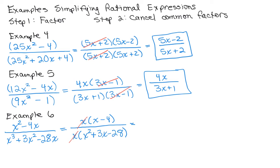Or you could wait until the next step. But if I cancel them now, then all I have left in the numerator is X minus 4. And in the denominator, I need to factor X squared plus 3X minus 28. And that happens to be X plus 7 times X minus 4.